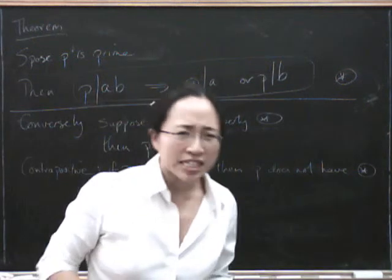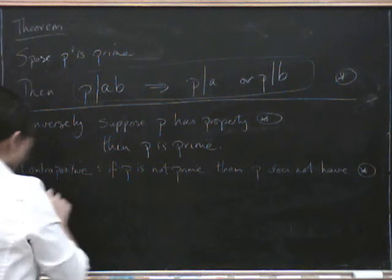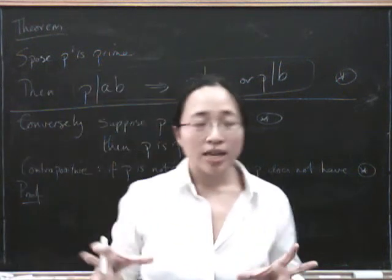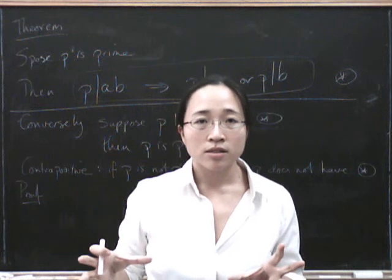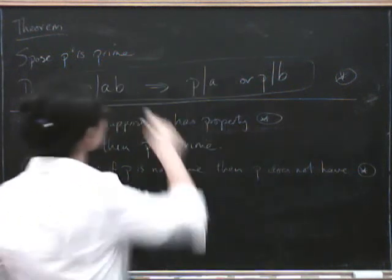Well, this is kind of easy. If p is not prime, then we can write it as something times something else in a non-trivial way. And then, we can use that to contradict this.